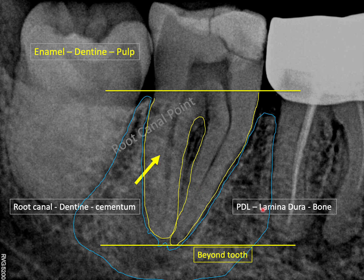In the bone, we look for any radiolucency in the form of abscess or cyst. We also look for anatomic structures such as the mandibular canal on a lower molar, and the maxillary sinus on an upper molar. Additionally, we look for foramina like the mandibular foramen or incisive foramen and other anatomically important structures.